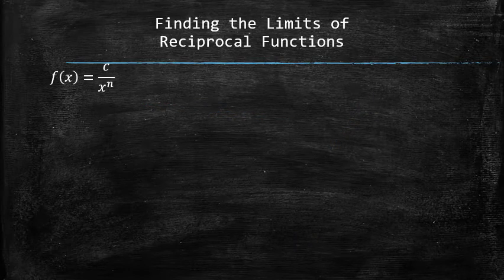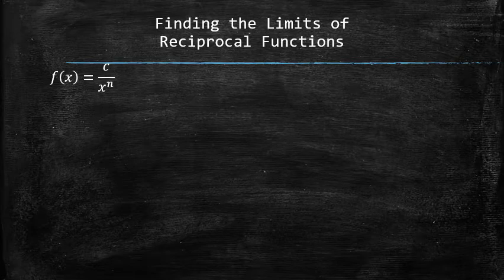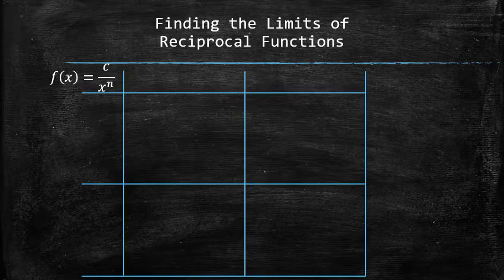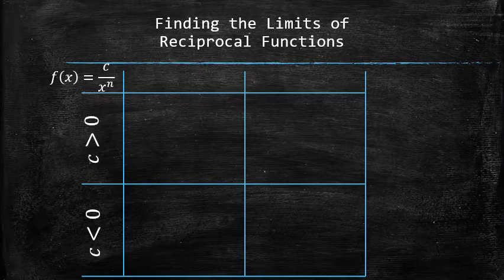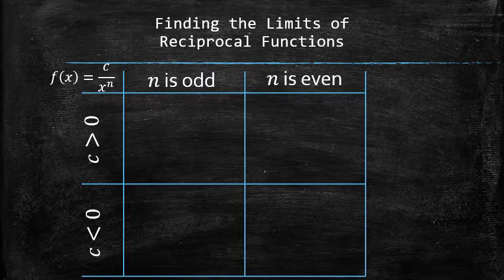What makes reciprocal functions special is that all of them have the same end behavior, and only four possible behaviors around zero, depending on the sign of the coefficient and whether the degree is even or odd. You can follow the link in the description of the video to figure out the four patterns for yourself, but here is the summary of them.